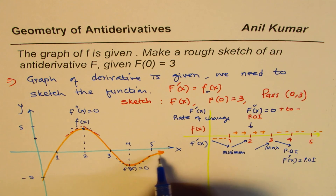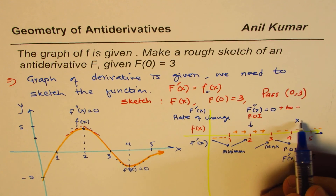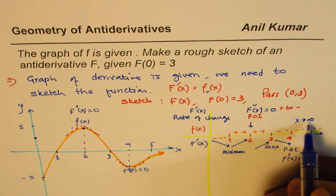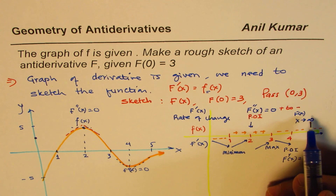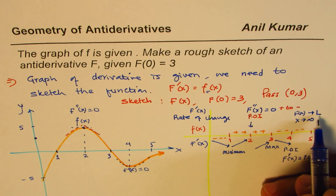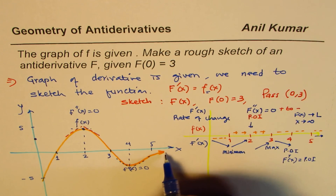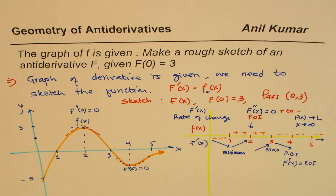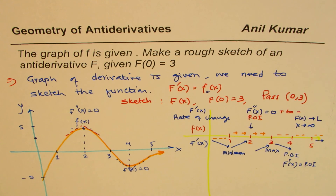After x = 4, the rate of change is negative but approaching zero. As x approaches infinity, F(x) approaches a limiting value L — so there is a horizontal asymptote. The function is just approaching a constant value from here, which gives us some idea about the behavior of the anti-derivative.